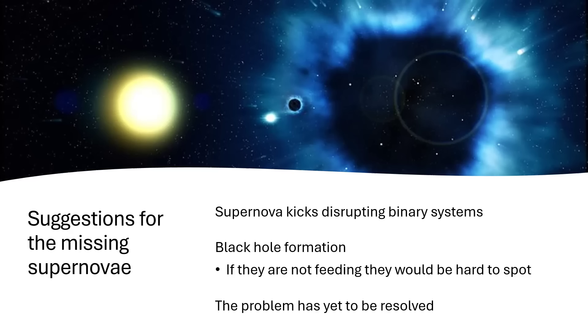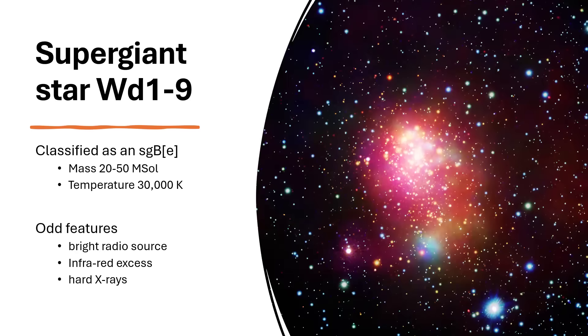Now, I did mention that we would talk about Westerland 1-9, the most unusual star in the group. And this has a classification. It's a B-type star, subclass (E), with SG for supergiant on the front. So a very massive star, somewhere in the range 20 to 50 solar masses, 30,000 degrees Kelvin. But very, very odd features about it. Bright radio transmissions coming from it, excesses of infrared, hard X-rays all pouring away from this star.